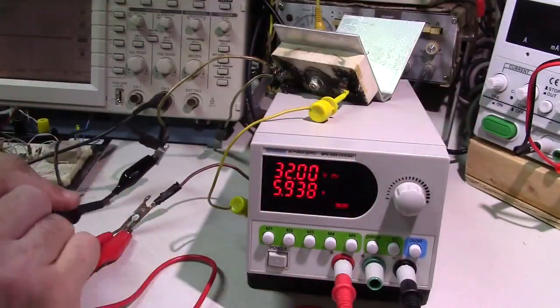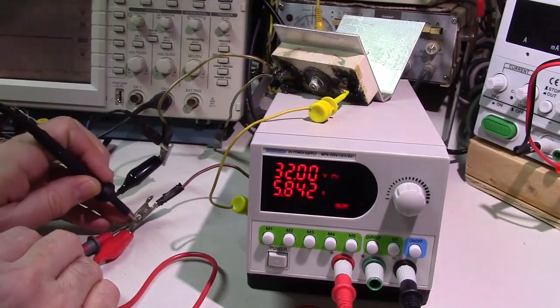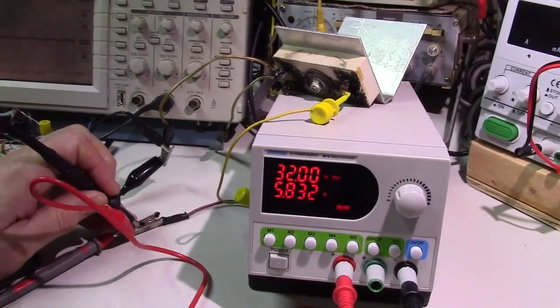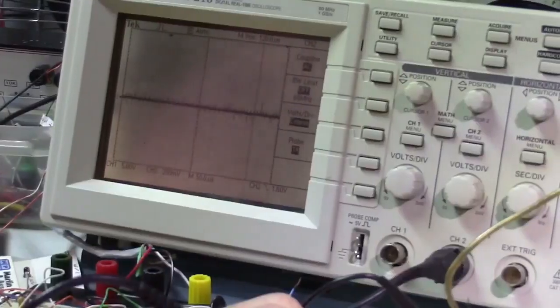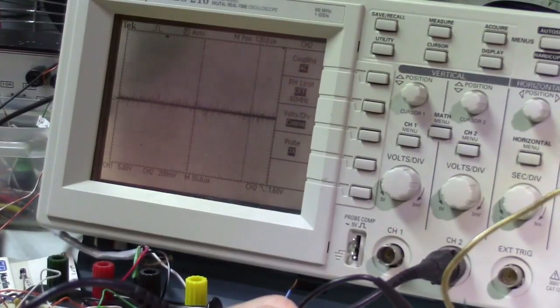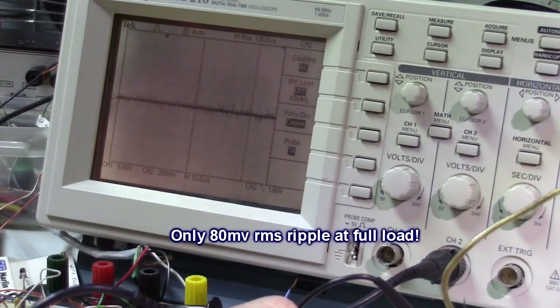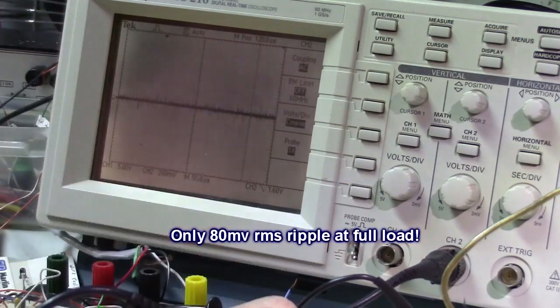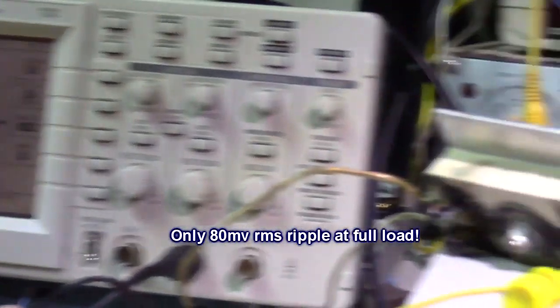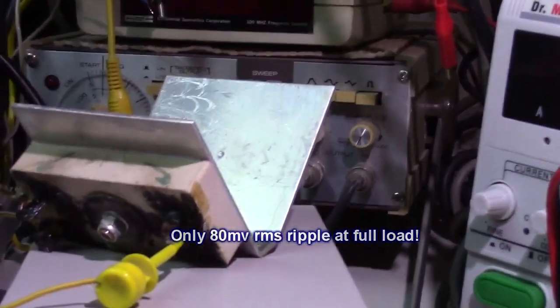I have an oscilloscope right here, and let's show you. I'm getting less than 200 millivolts peak-to-peak of ripple at full current. That's really good, very clean.